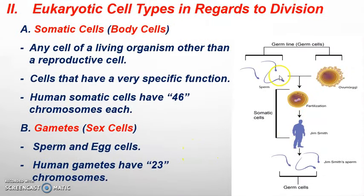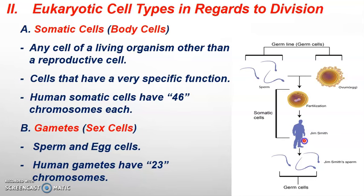If you look at the diagram, dad gives you 23 chromosomes and mom gives you 23. You get what's called a zygote that turns into you — or Jim Smith here in the diagram. He would have 46 chromosomes in each of his cells. Eventually Jim will produce Jim Smith's sperm, which will only have 23 chromosomes apiece.